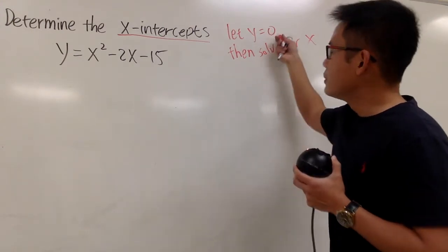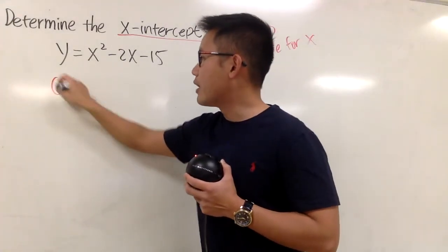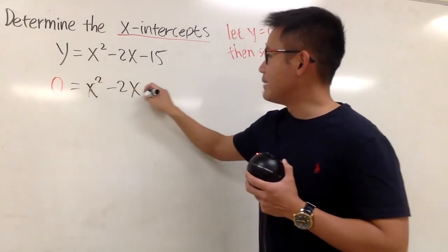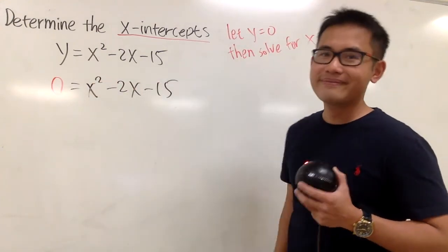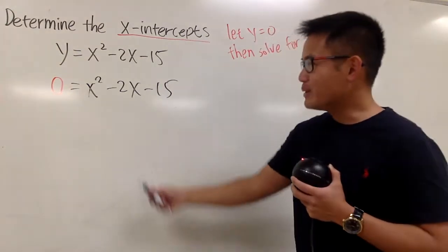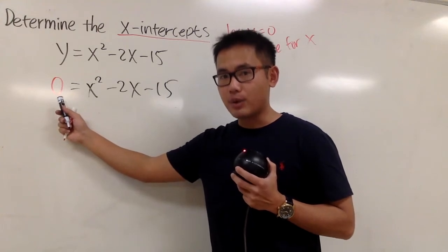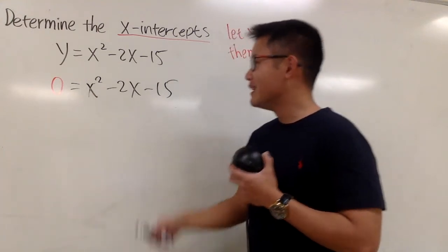So now let's do the work. Put the 0 for y right here, and then we have x squared minus 2x minus 15. And now how can we solve this equation? Notice that this is a quadratic equation, and we have the 0 on the left-hand side already. So this is good.